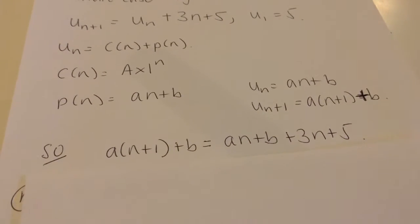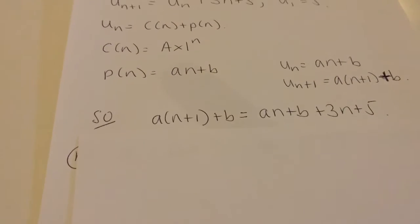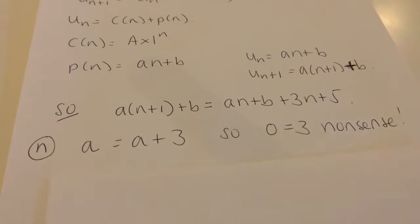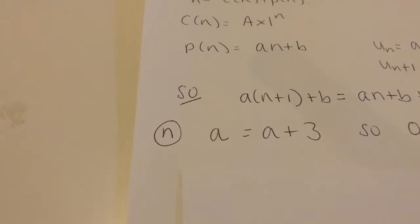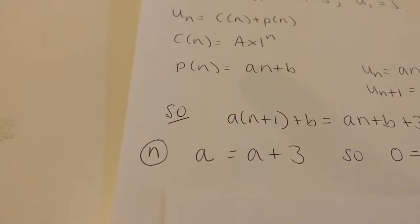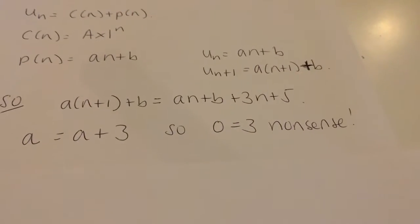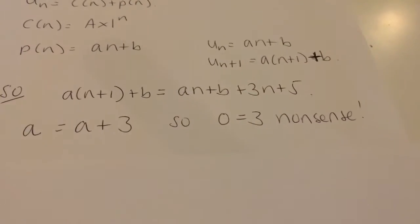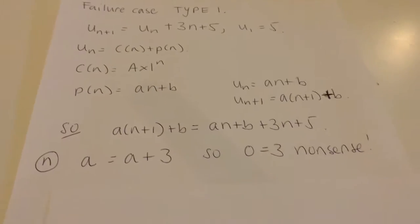I substitute those into my recurrence relation and compare the coefficients. Comparing the coefficients of n: on the left-hand side I've got a, on the right-hand side I've got a plus 3. When I attempt to solve it, I end up with 0 equals 3, which of course is total nonsense.